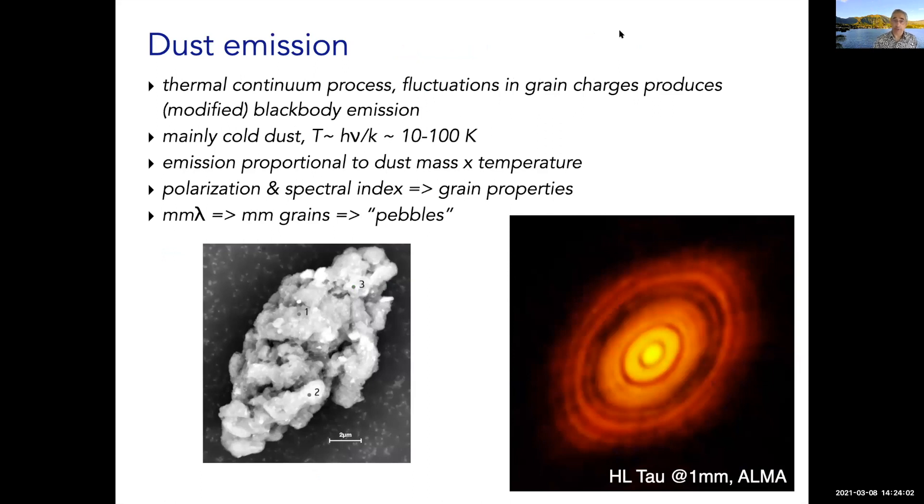As we move to shorter wavelengths around a millimeter where the SMA works, dust emission becomes very strong. This comes not from the gas but from the solid particles, the dust particles in the gas. It comes from electrons moving in those solid particles. The emission is like a black body, but because the solid particles have a specific size, they cannot emit very long wavelengths efficiently. So it is a modified black body, a gray body. For ISM grains, they're typically submicron to a micron in size. In protoplanetary disks, they can grow up to millimeters in size.